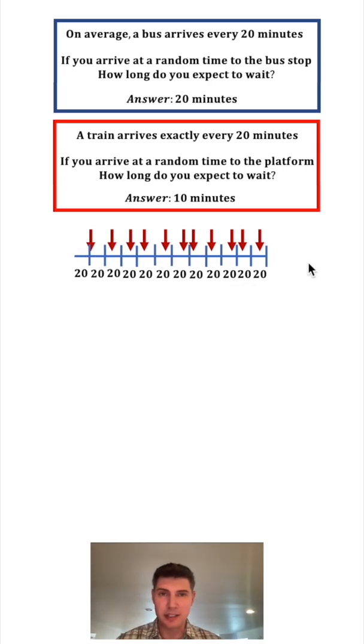So why does random arrival give us an expected value of 20 and exact arrival gives us an expected value of 10? For both of them on average you're going to see a train every 20 minutes, but we get different answers.